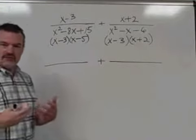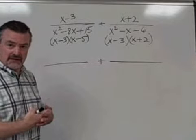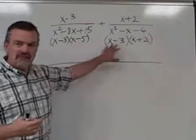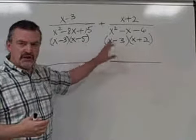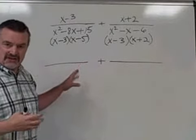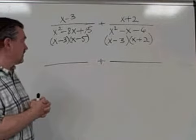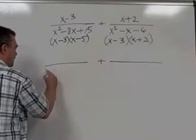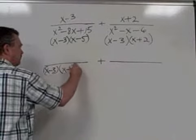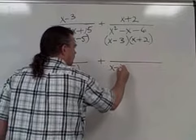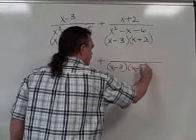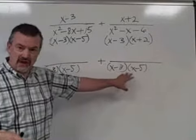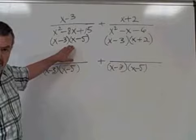Now when we construct our common denominator for fractions like this, the common denominator must contain all of the factors that the two denominators contain together when we combine them together. So x minus 3, x minus 5, those two binomials must be factors of the common denominator because they are factors of this denominator.